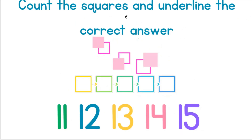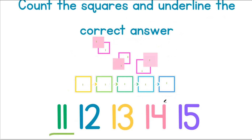Count the squares and underline the correct answer. 1, 2, 3, 4, 5, 6, 7, 8, 9, 10, 11. There are 11 squares.